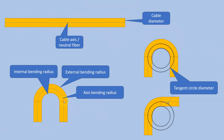That's called the axis bending radius — the bending radius at the axis of the cable. Then we have the internal bending radius, which is the bending radius on the inner side of the cable when bent — the smaller radius. We also have the external bending radius on the outside of the curvature. The external is least used; the most used are the axis and the internal. The bending radius is essentially the radius of a circle tangent to the curvature at that point.